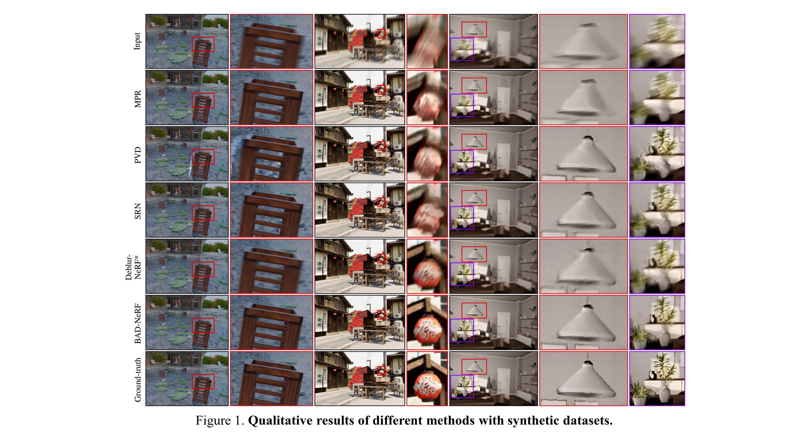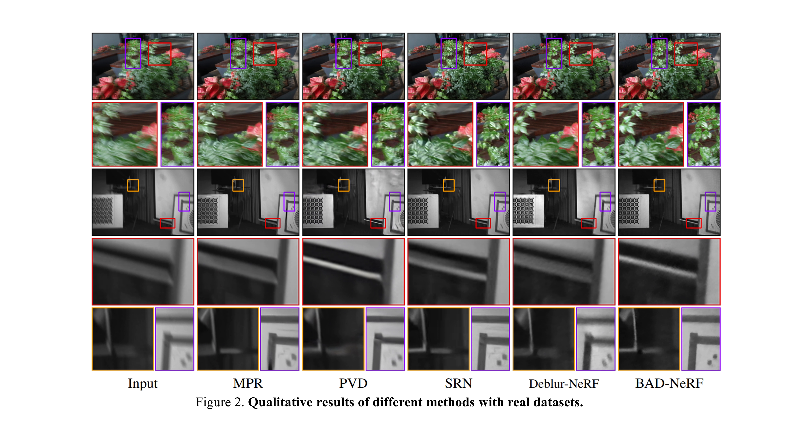Since Deblur-NeRF does not explicitly model occlusions, it fails to render sharp edges with large depth variations, as shown in the results in the second column. The experimental results demonstrate that our method achieves superior performance over prior methods on the real dataset as well.